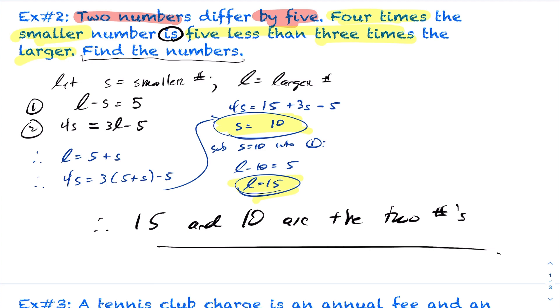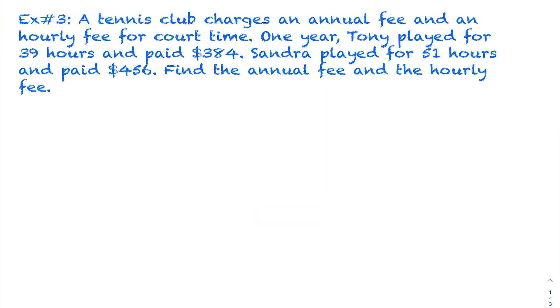There's example 2. All right, so moving on to example 3 here, we have a tennis club charges an annual fee and an hourly fee. So there's two charges going on here. One year, Tony played for 39 hours and it cost him $384. Sandra played for 51 hours and that cost $456. Find the annual fee and hourly fee. So again, in the question, they introduced those variables to you. I'm going to let A equal the annual fee and let h equal the hourly fee. So again, we have to create two equations.